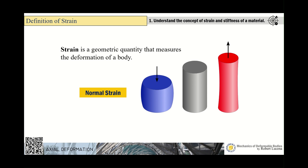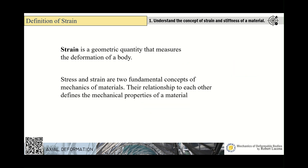Strain is the measure of deformation relative to the original shape of a material or object. Stress and strain are two fundamental concepts of mechanics of materials, and their relationship to each other defines the mechanical properties of a material.